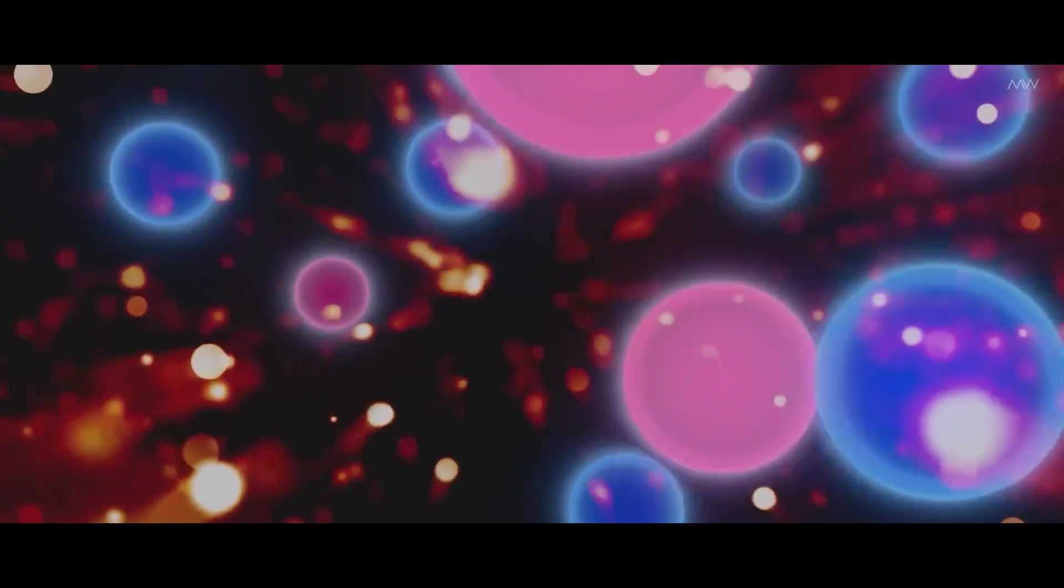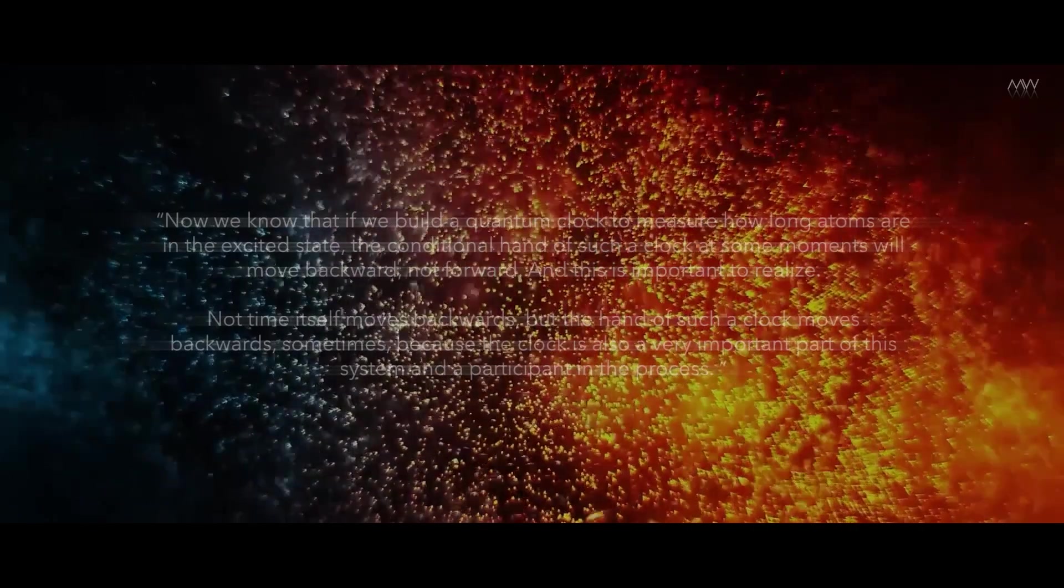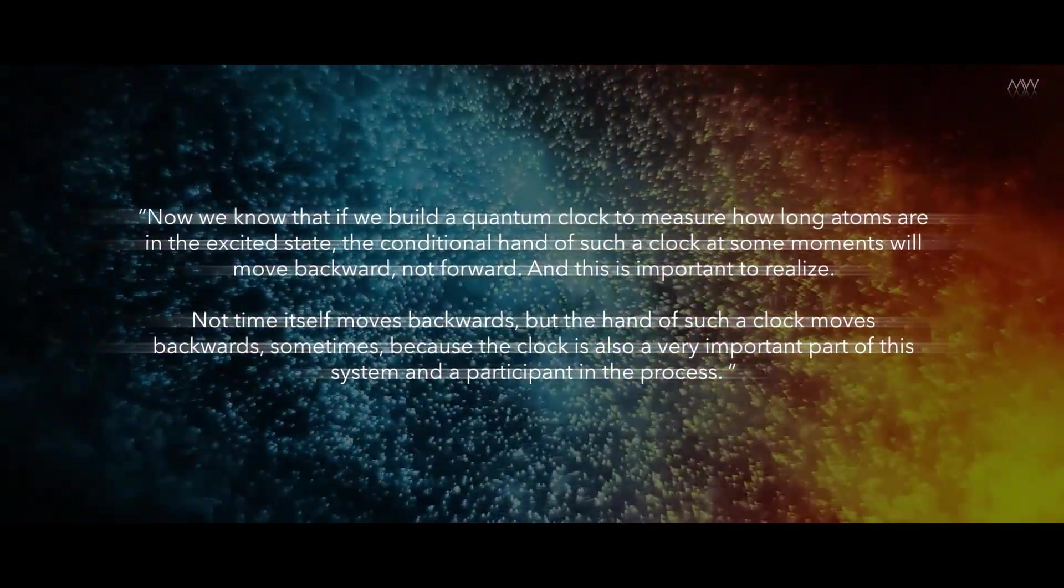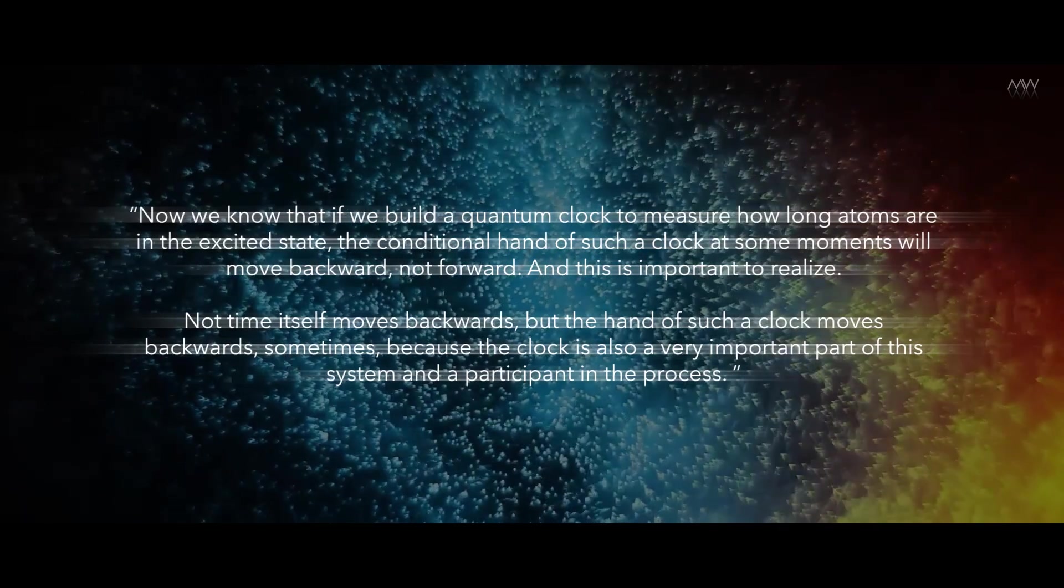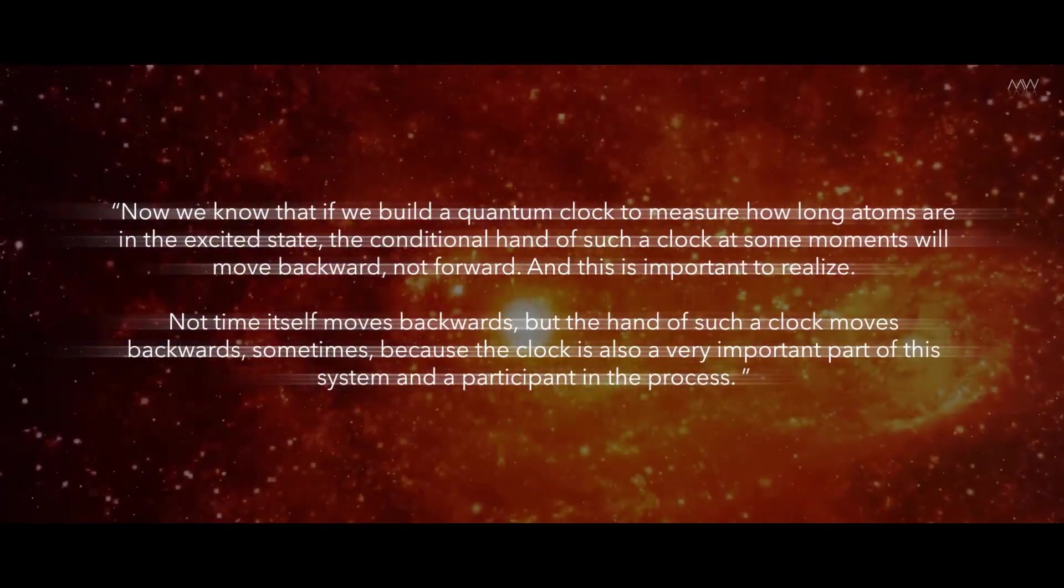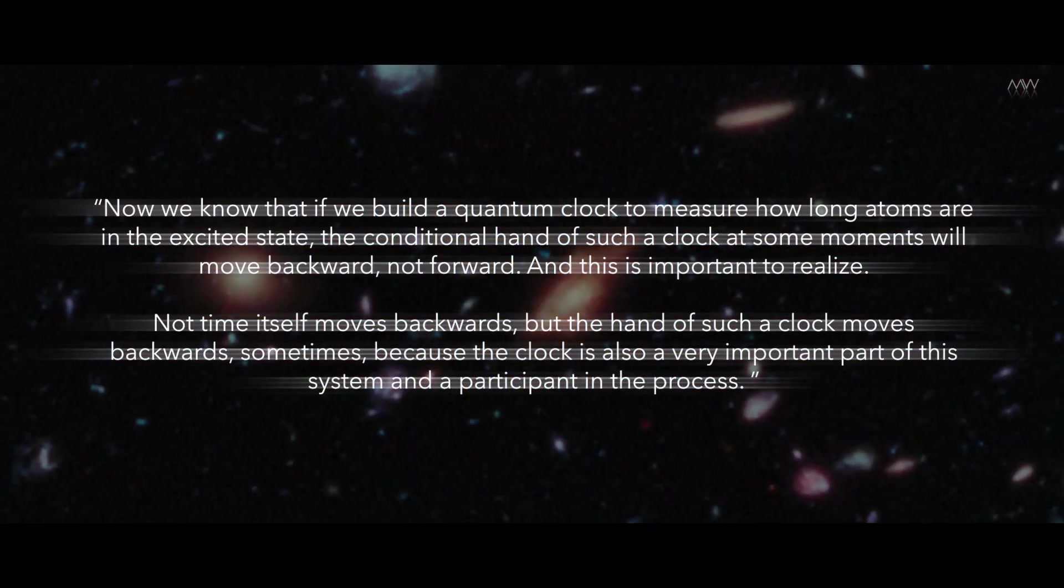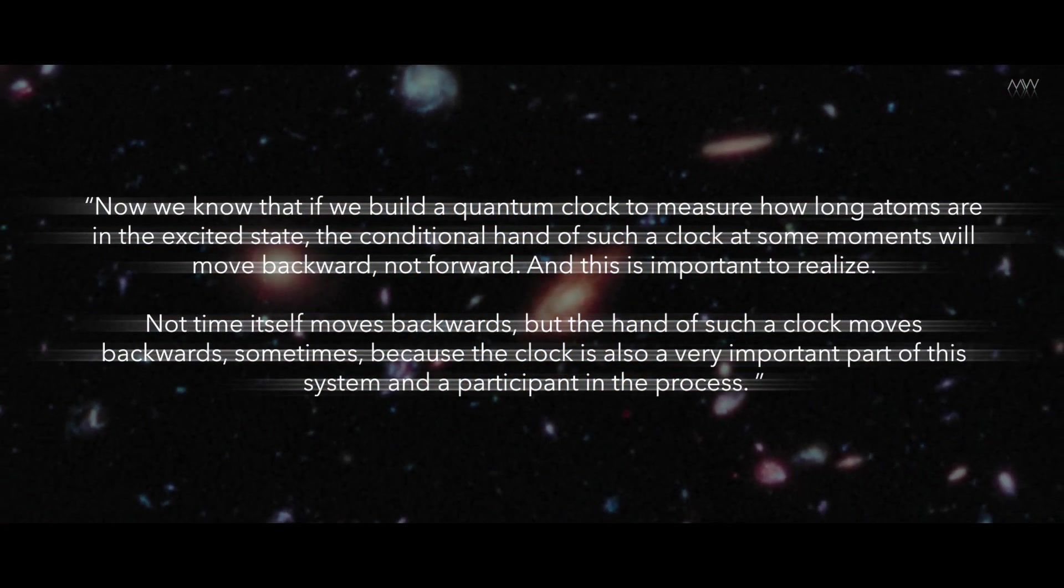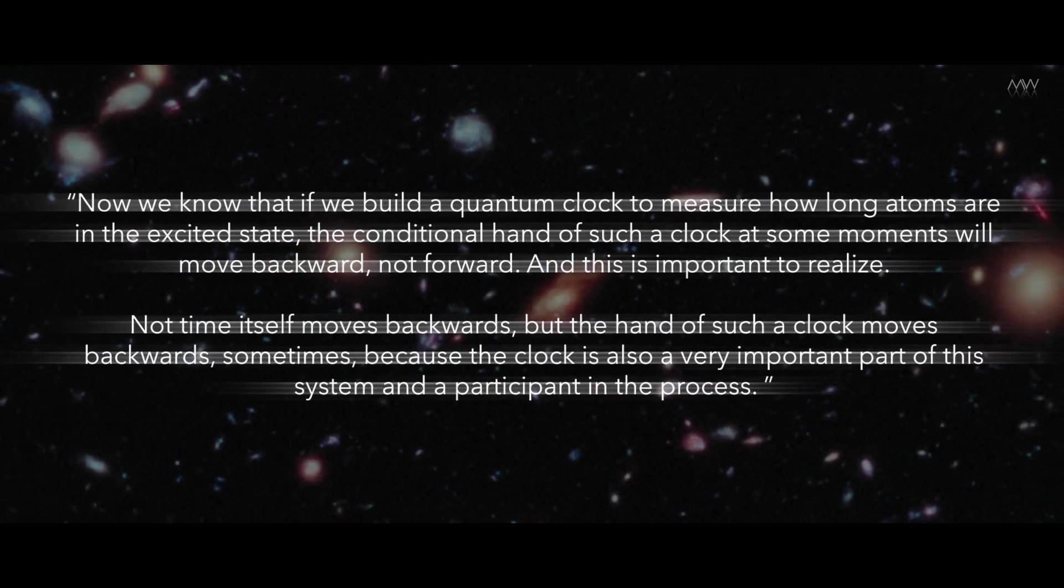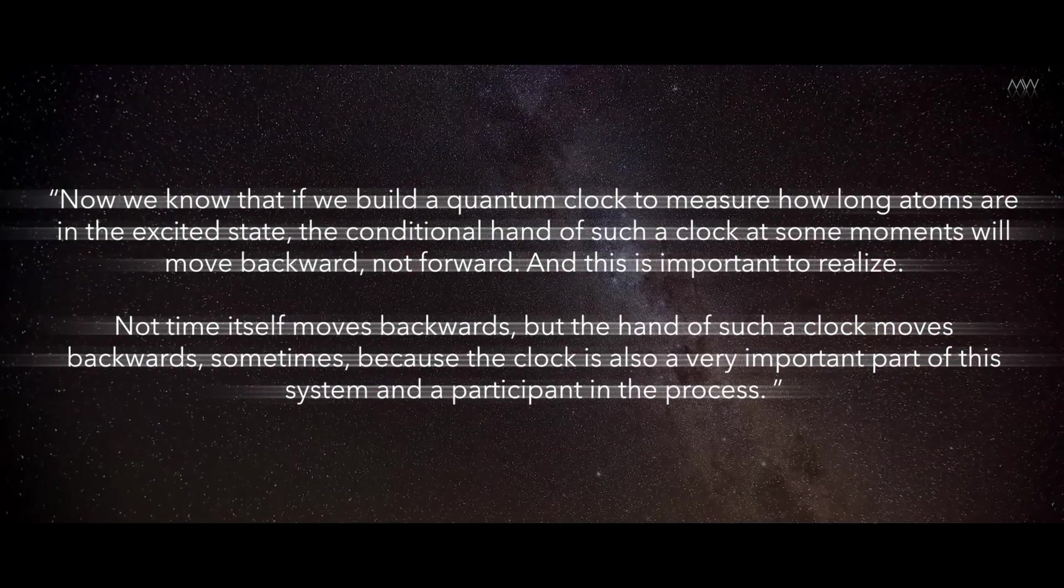And it seems to be a paradox, but not really. As the researchers themselves say, now we know that if we build a quantum clock to measure how long atoms are in the excited state, the conditional hand of such a clock at some moments will move backward, not forward. And this is important to realize - not time itself moves backwards, but the hand of such a clock moves backwards, sometimes, because the clock is also a very important part of this system and a participant in the process.